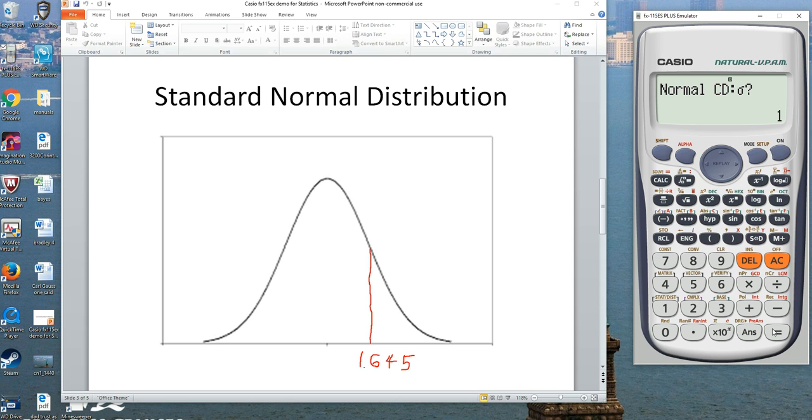We want our standard deviation to be 1, our mean to be 0, because we're dealing with the standard normal. So 95% of the area is from here on, and we're going all the way, basically negative infinity.